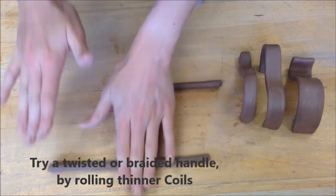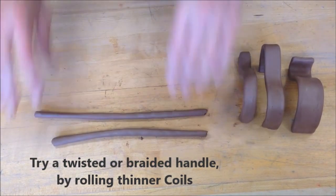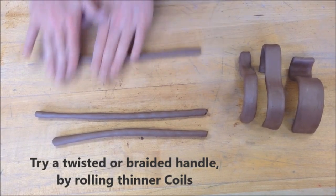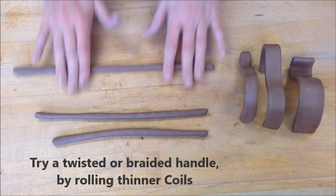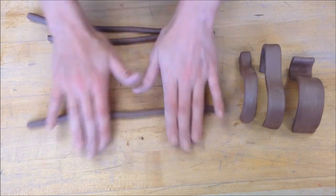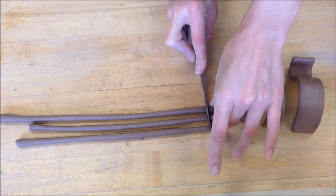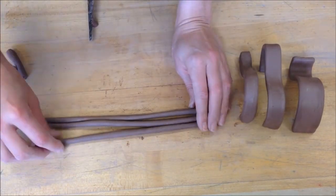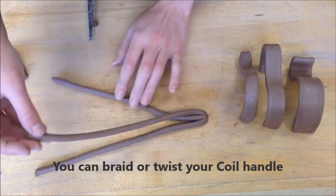You can try all sorts of neat handle designs. Here's a braided handle using thinner coils. So you can see I'm just rolling those coils a little bit thinner. And in this one, I'll braid to create a coil handle.